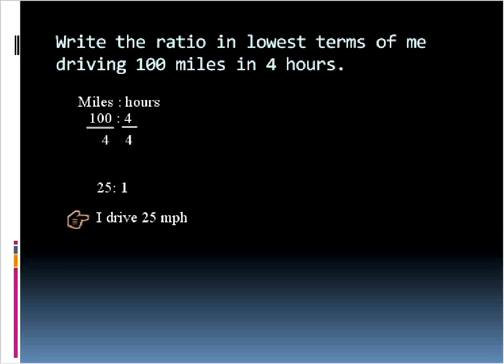In other words, I drive 25 miles per hour. Maybe I'm going through like a school zone for four hours. I don't know why I would drive 25 miles an hour for four straight hours, maybe traffic. The point is that I've reduced my ratio down to lowest terms, and now I'm driving 25 miles in one hour, 25 per one, 25 miles per hour.